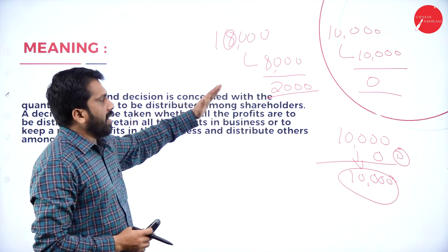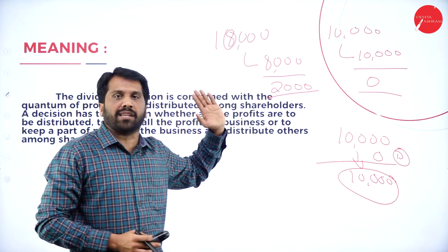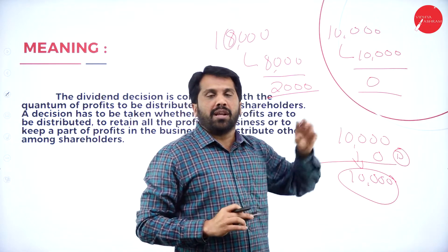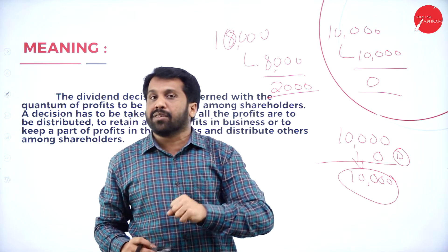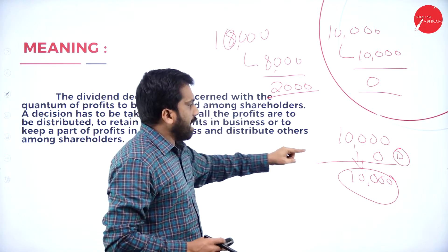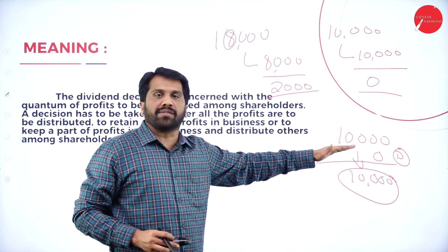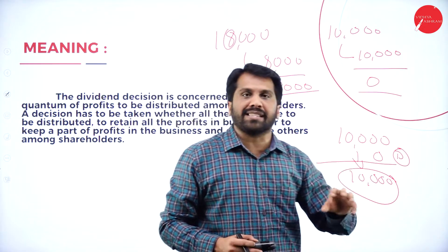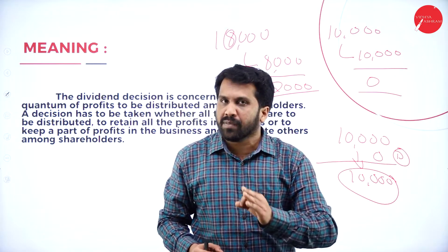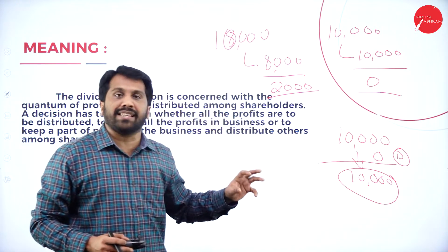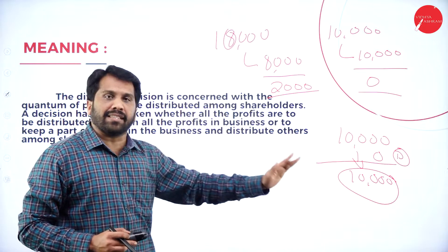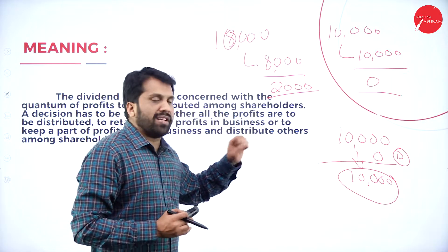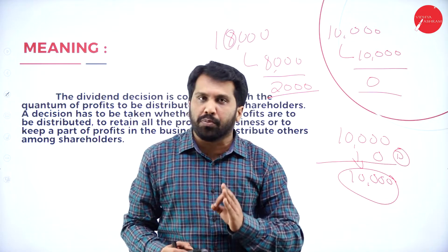In example 1, they gave almost 80% — that is 8,000. In example 2, they gave almost 100% to the shareholder — whatever profit the company earned was given to the shareholder. In example 3, whatever 10,000 was earned, nothing was given to shareholders — everything was kept as savings. All three are called dividend decisions — it is the company's choice to give dividend or keep it as savings.